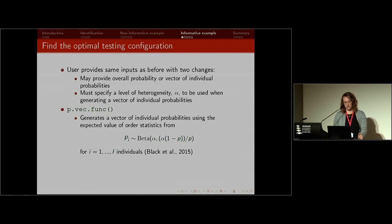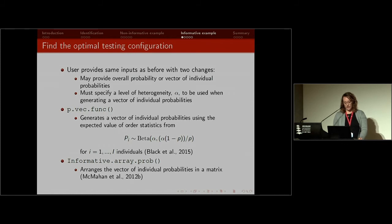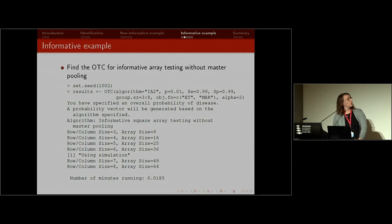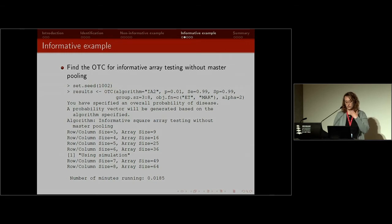The p.vec.func function generates a vector of individual probabilities using the order statistics from the beta distribution, and Michael Black's 2015 paper gives more details about that. Another function, informative.array.prob, arranges the vector of individual probabilities for array testing into a matrix. You could do this randomly, or there are two methods from Chris MacMahan's paper: the spiral and gradient methods. It turns out the gradient method is the most optimal for array testing.